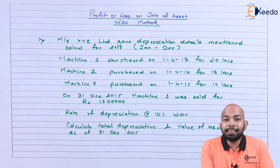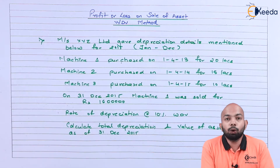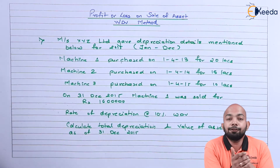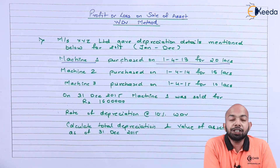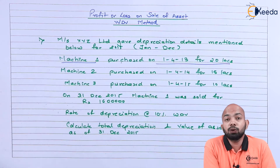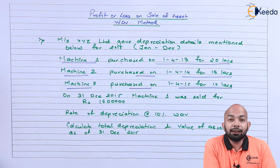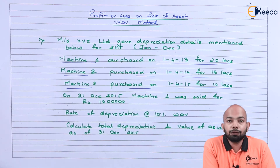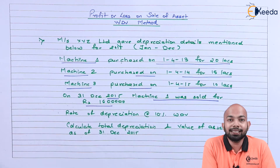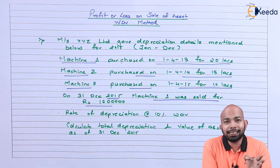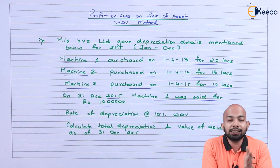We have mentioned the details of three machines. Machine 1 was purchased on 1st April 2013 for 20 lakh rupees. Machine 2 was purchased on 1st April 2014 for 15 lakh rupees. Machine 3 was purchased on 1st April 2015 for 10 lakh rupees. On 31st December 2015, Machine 1 was sold out for 16 lakhs. The rate of depreciation is 10% under WDV method. We have to calculate the total depreciation and the value of all machines after the sale transaction until 31st December 2015.